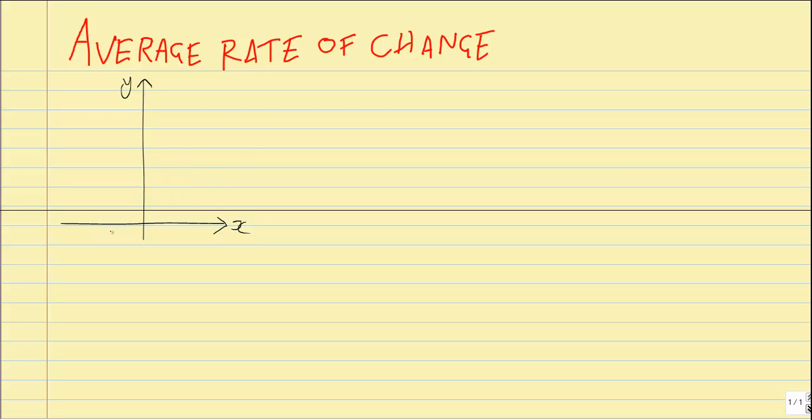If we want to calculate the gradient of a linear straight line function, it's fairly easy to do. Because the gradient is constant throughout, we just pick any two points and use our rise over run formula to calculate the slope or gradient.